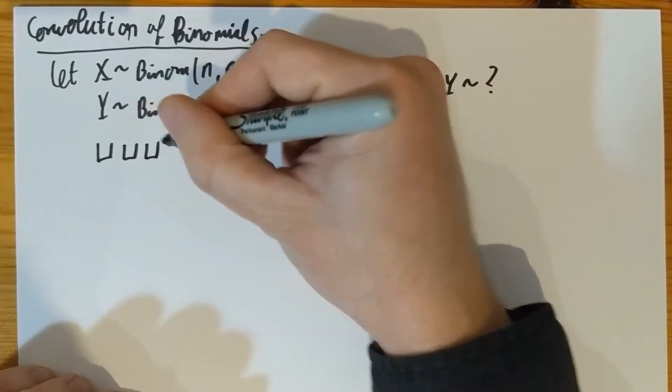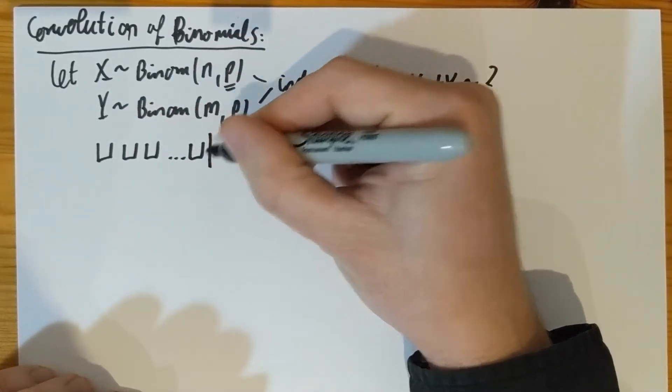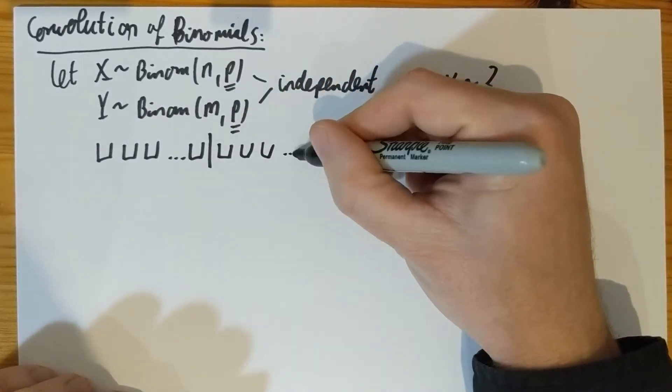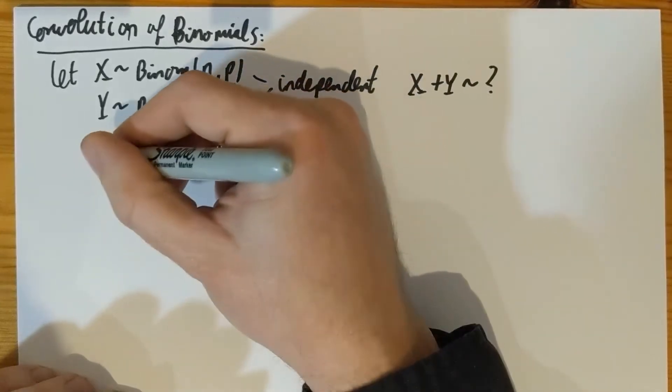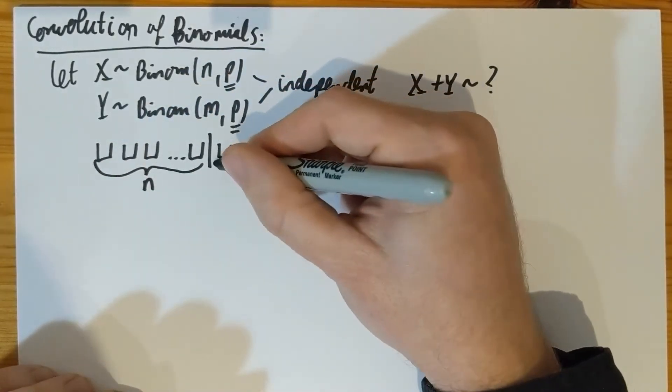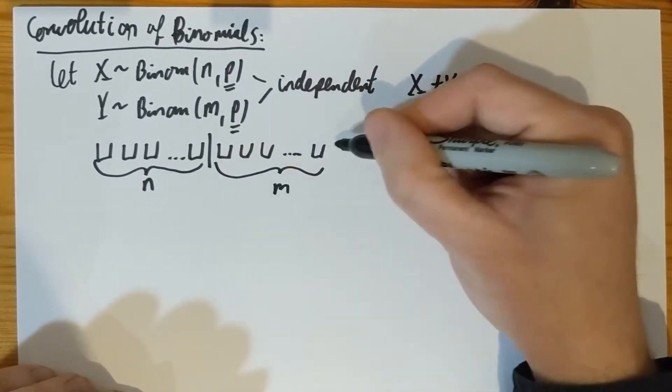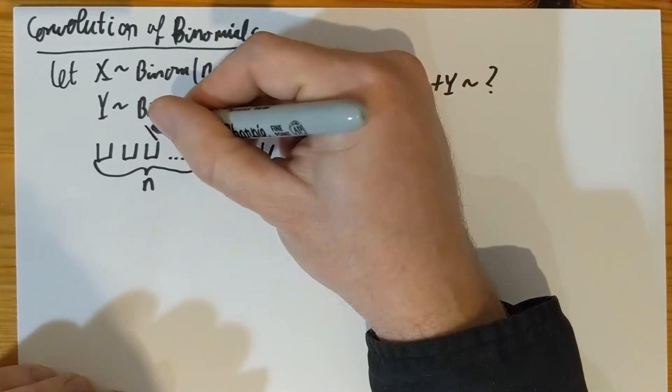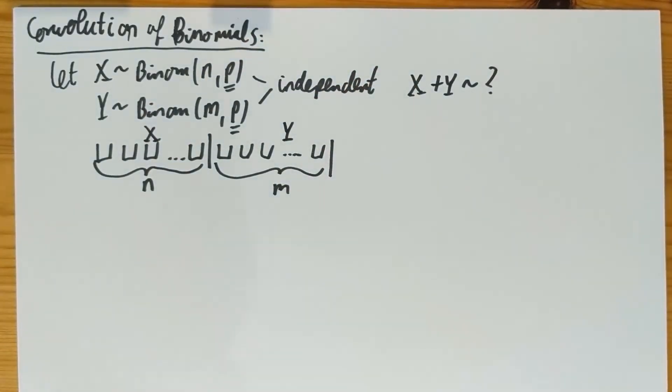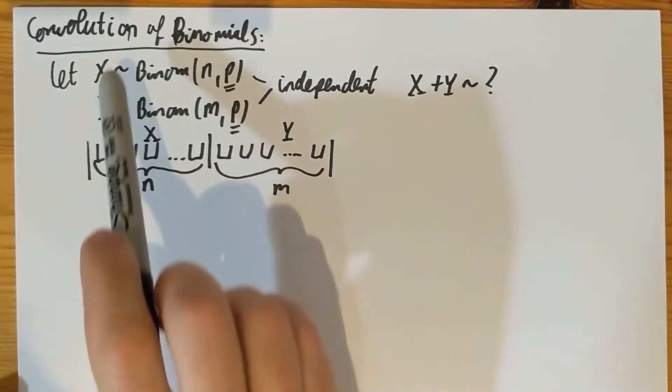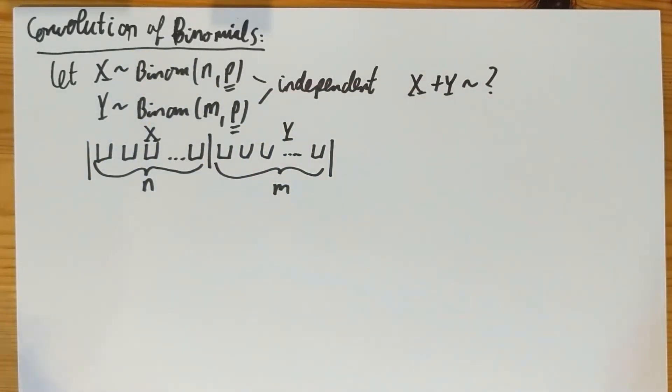First, the probabilistic way. If you just imagine what X is: X is the number of successes in N independent trials of success probability P. Y is the number of successes in M independent trials of success probability P. So if you now imagine a sequence of N plus M independent trials in total, and you divide that into the first N and the last M, you count the number of successes in the first part, you count the number of successes in the second part, then you actually realized X and Y being binomials of the appropriate parameters, and clearly they are independent because it's two different sets of trials.